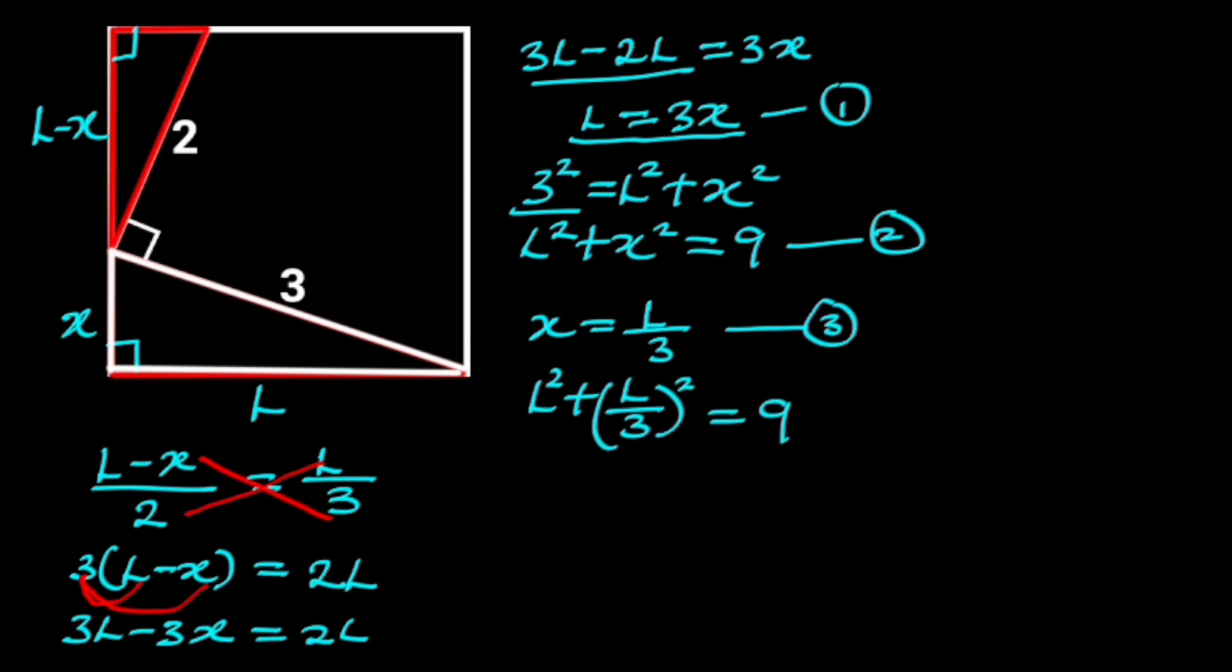This can be simplified as L squared plus L squared over 9 is equal to 9. Since we are looking for the area of the square, and the area of the square is the same as L squared, which is the square of the length of the side of the square, we are going to factor out L squared from this equation. Doing so will give us L squared times 1 plus 1 over 9 is equal to 9.